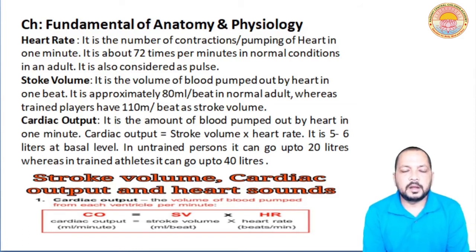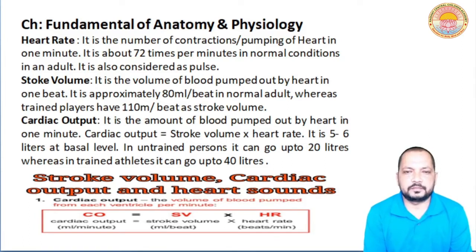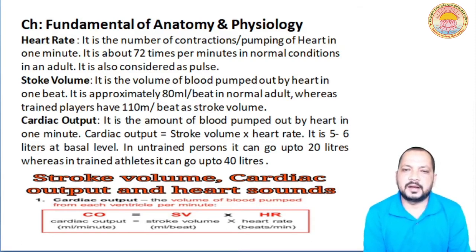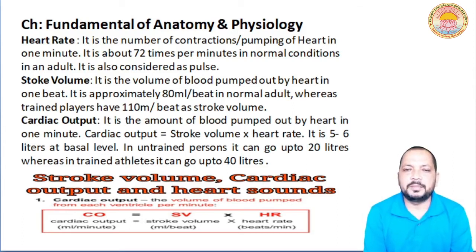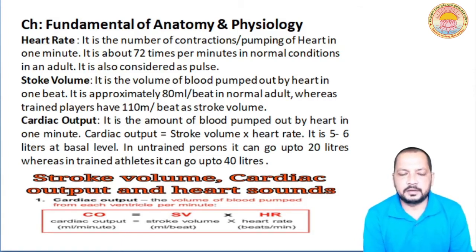Another point is stroke volume. Stroke volume means हमारा pumping organ — heart — एक beat में कितना blood pump करता है। उसे हम stroke volume कहते हैं। यह एक beat में approximately 100 ml होता है normal condition में, और trained athletes में यह about 110 ml per beat होता है। जो untrained होते हैं उनमें यह condition differ होती है।